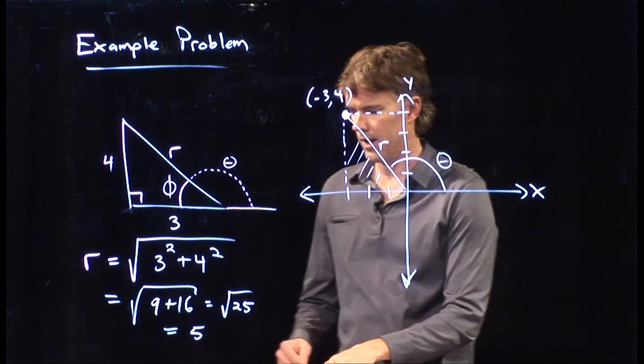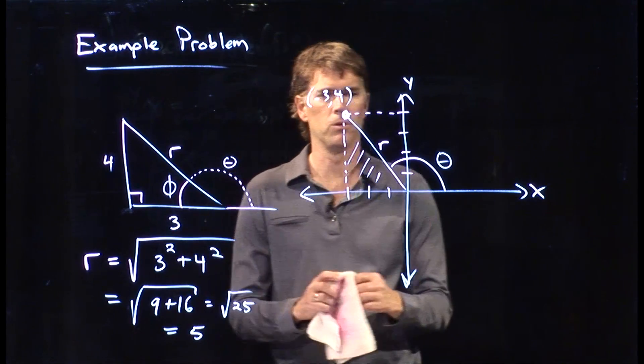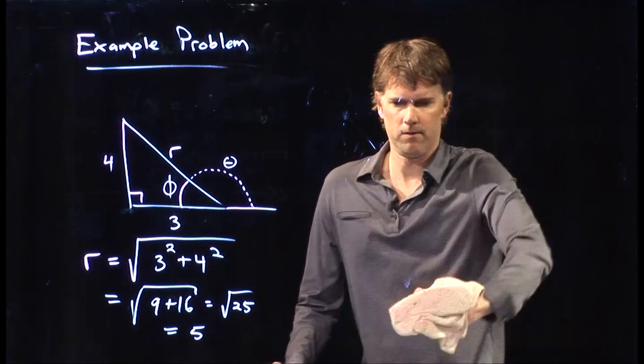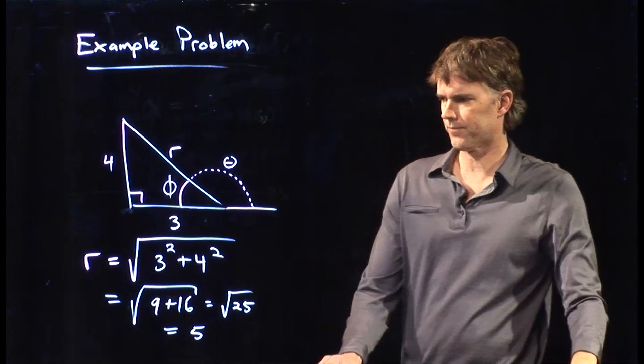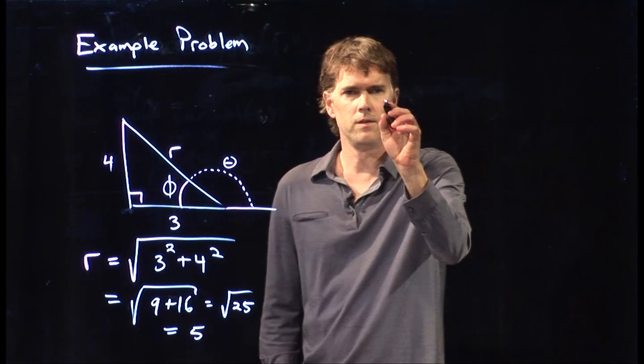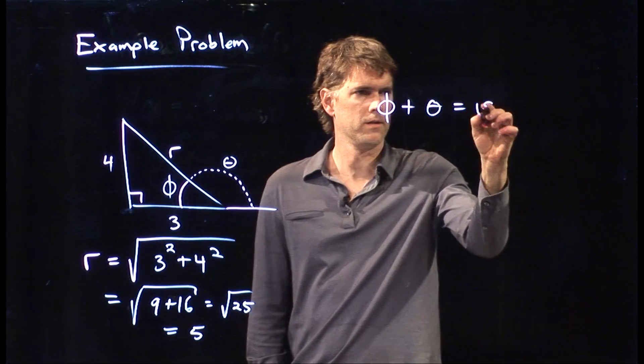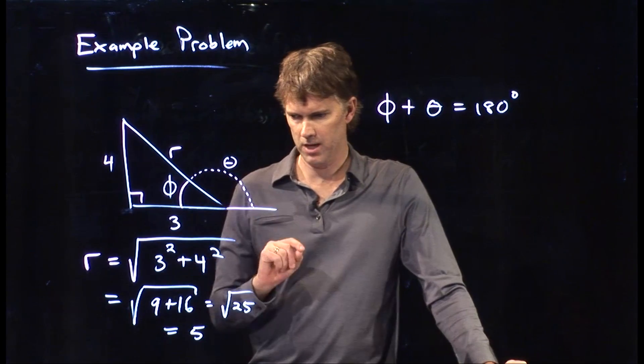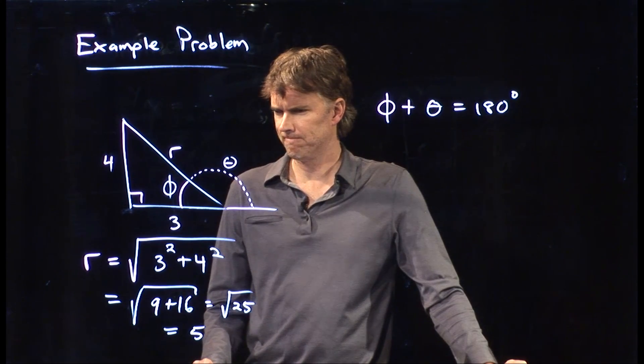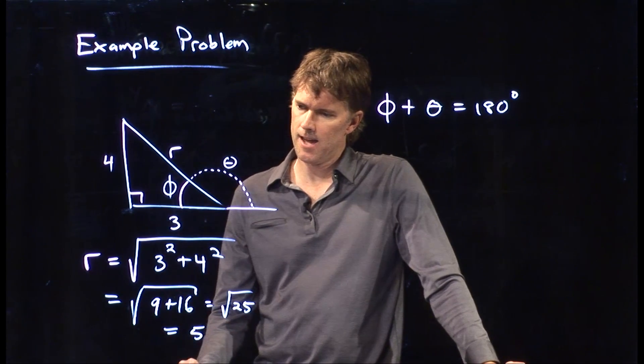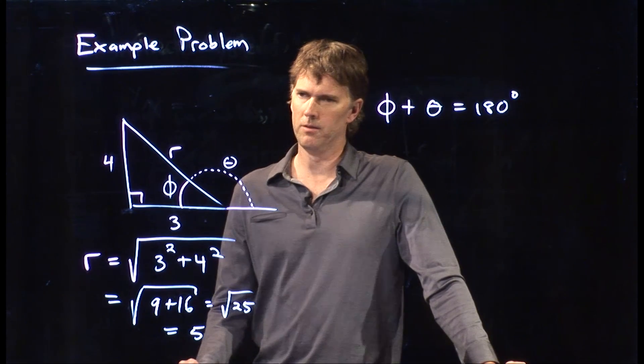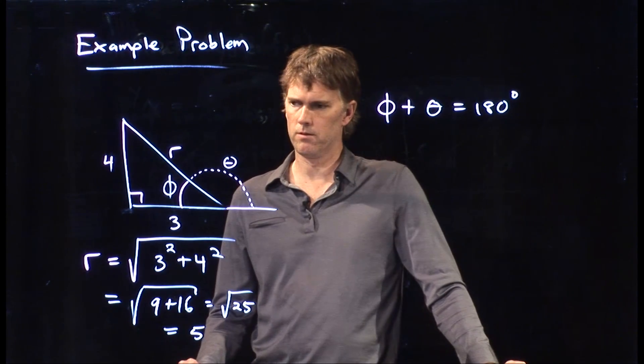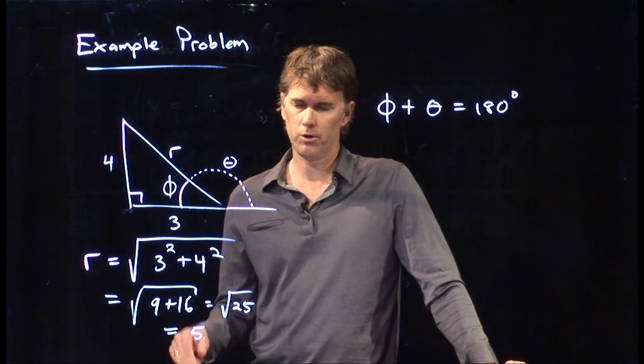And then what we can say is the rest of the angle is theta. And so right off the bat, we know that phi plus theta has to equal 180 degrees. If we can determine what phi is, then we know exactly what theta is. So let's look at this triangle again. And what should I use to calculate phi? Do I need to use sine? Do I need to use cosine? Do I need to use tangent? Or could I use any of them?